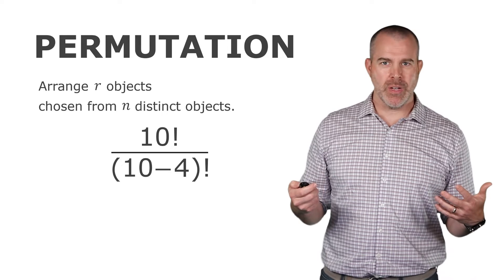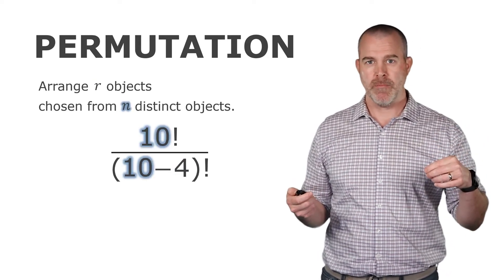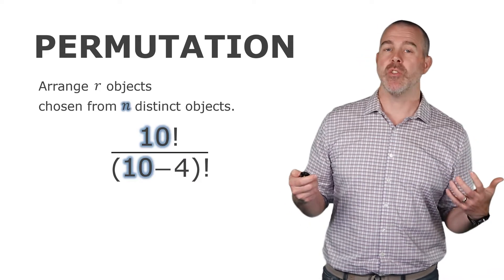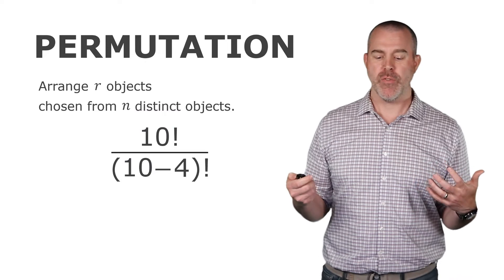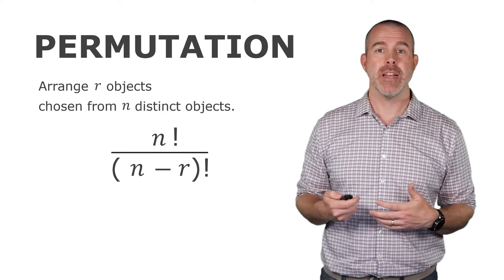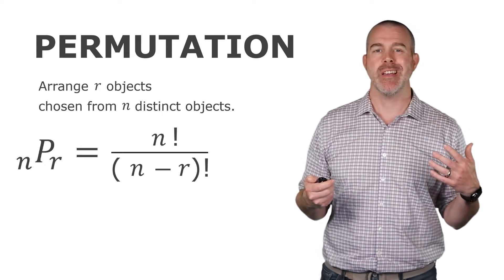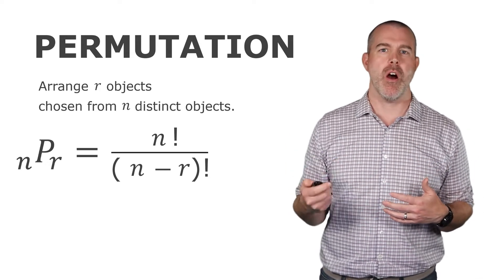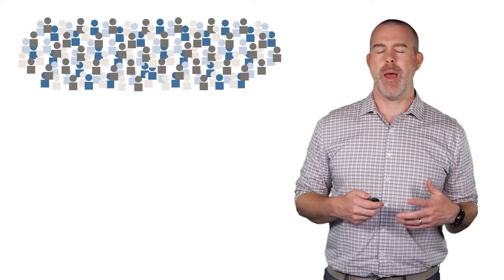If we generalize this, the 4 is the number of objects we're choosing. And then the 10 is the total number of objects that we're picking them from. So we have this formula then. We could say n factorial over n minus r factorial. And this is called a permutation, sometimes written nPr, the permutation of r objects chosen from n.